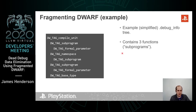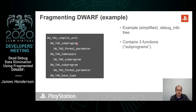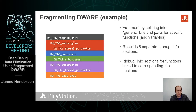So what is fragmenting DWARF? Fragmenting DWARF is an approach to allow us to remove the excess debug data. Here we have an example debug info section with generic bits like compile units and more function-specific bits like subprograms — subprogram being DWARF terminology for a function. We fragment it by splitting it up into those bits: the bits that are generic and the bits that are specific to functions, and then we link those function-specific bits to their corresponding text section.